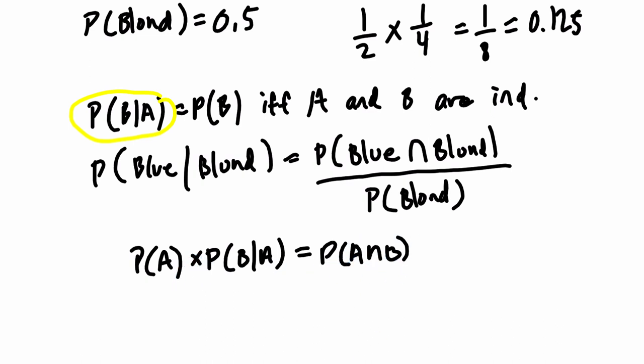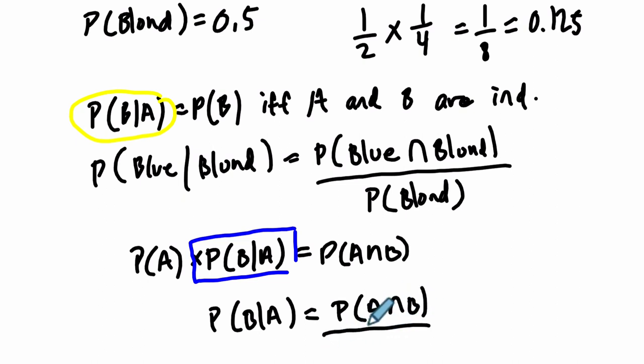In our case right here, all I've done is say, let's isolate this piece, what they want us to solve. I divided both sides by the probability of A. So I kind of reverse this formula and get this: B given A equals the intersection of A and B divided by the probability of A.